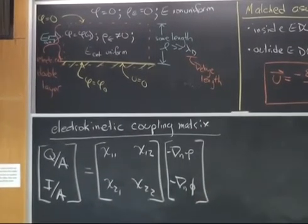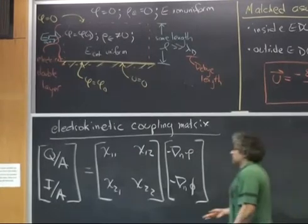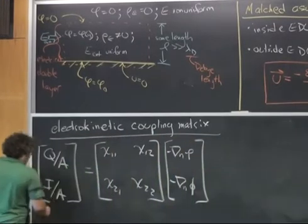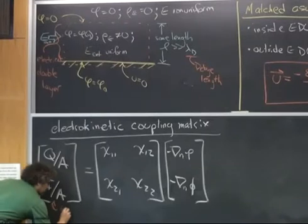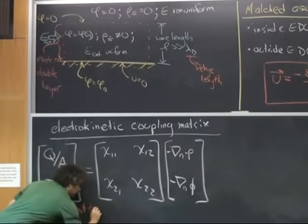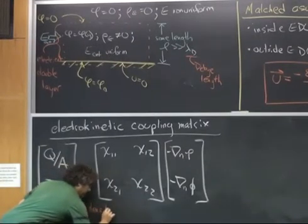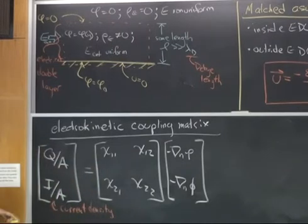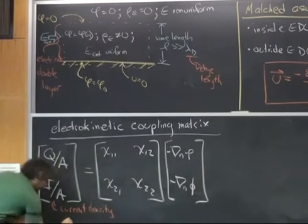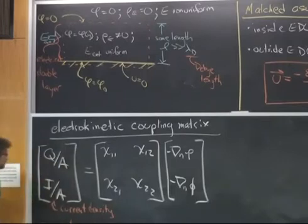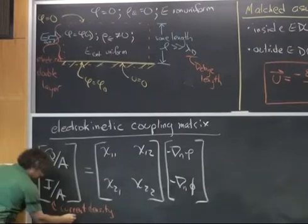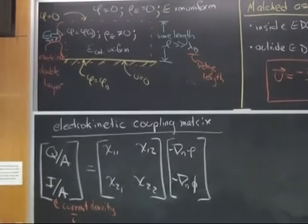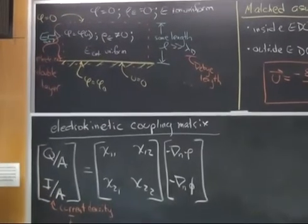A lot of these components can have different symbols. So I can write capital I over A. This is really the current density. So I write the current density with a lower case i. And because this is averaged across, I would denote this with a bar. So I can write I over A or I can write it as i bar.